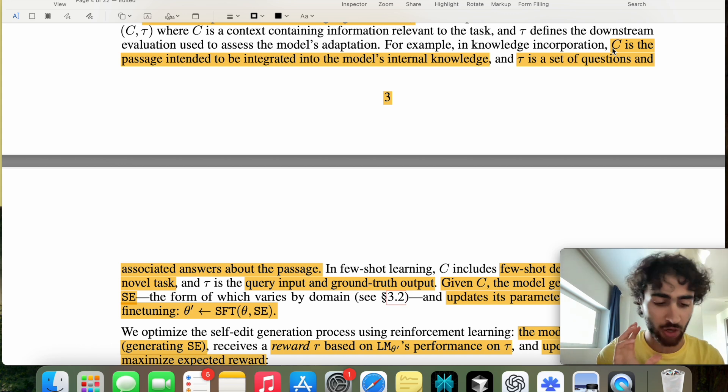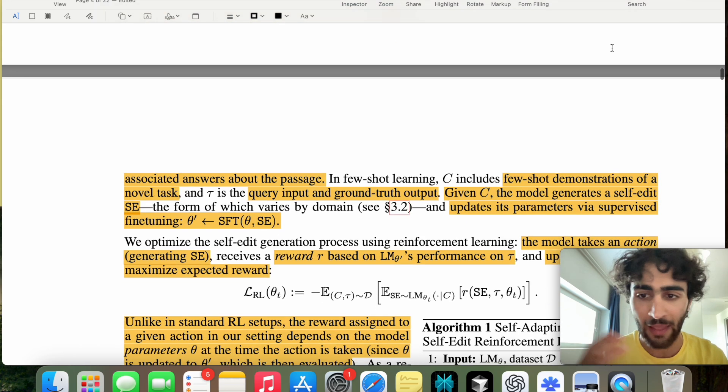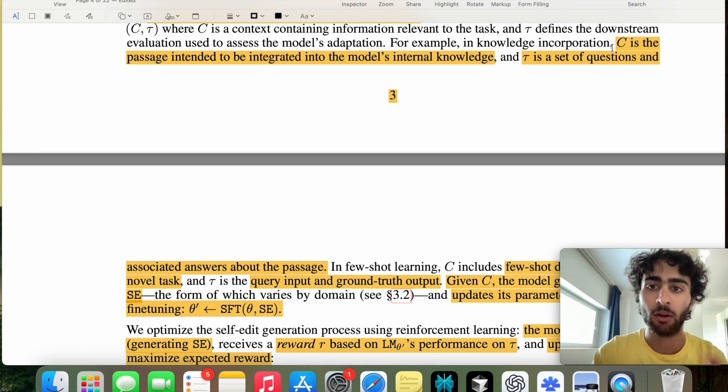So like if you want to give it context on the Egyptian pyramids, then you'll ask it, okay, which is the highest pyramid, tallest pyramid in Egypt, for example, and then see if it responds correctly or not, and then give it the respective, the appropriate reward.